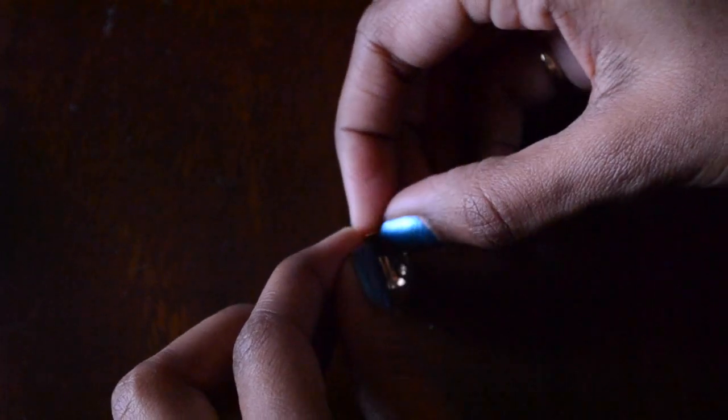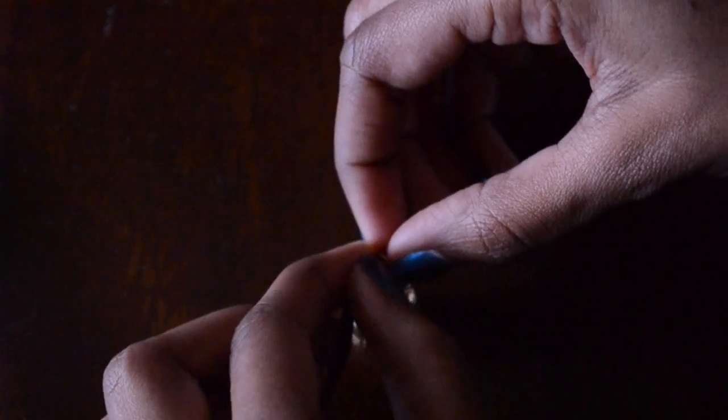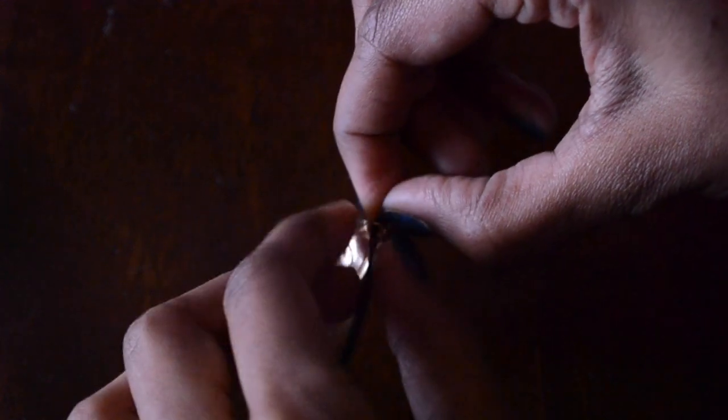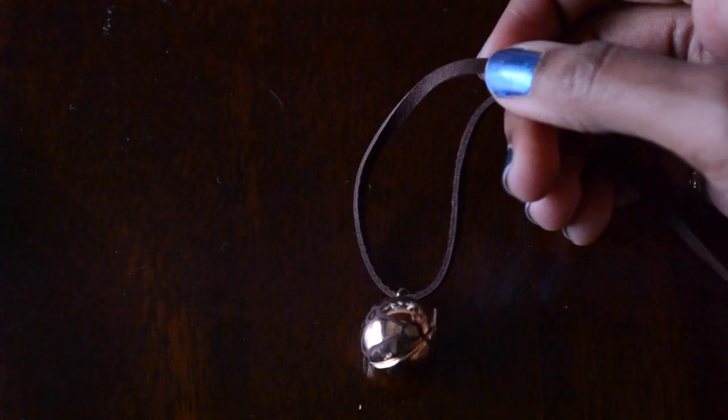Then add your suede cord through the jump ring, and you're done! You have a Treasure Planet pendant necklace.